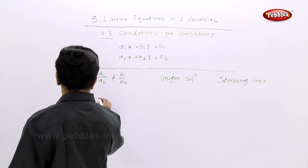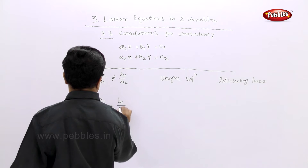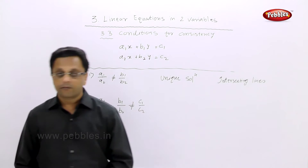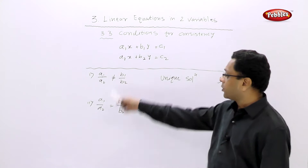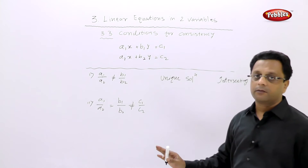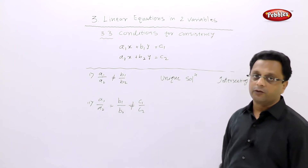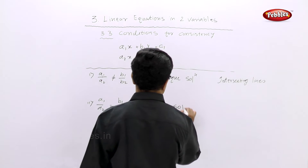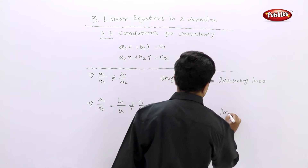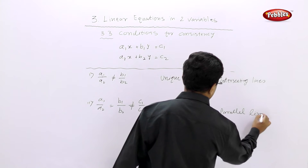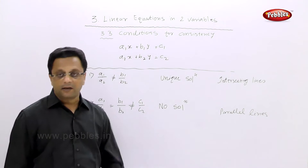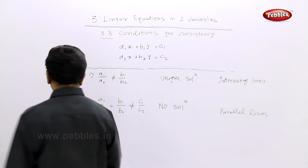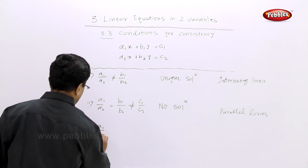The second condition is: if a1 upon a2 is equal to b1 upon b2 but not equal to c1 upon c2. In this case, a1/a2 and b1/b2 are the same, but c1/c2 is a different figure. In this case there is no solution and the lines are parallel lines.